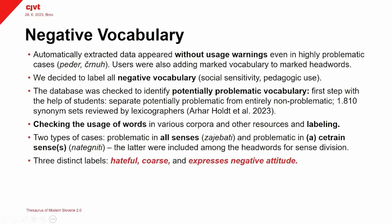First we had to identify it, and we did that with the help of students who helped us in the first step to separate words and phrases that were potentially problematic from those that were entirely non-problematic. That was quite a big piece of work, and after that we got 1,810 synonym sets that were potentially problematic. We gave those to the lexicographers, who then checked the usage of words and assigned the correct and appropriate labels for this vocabulary.